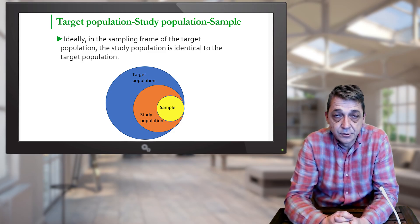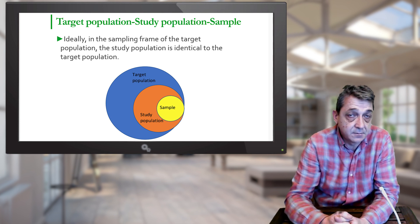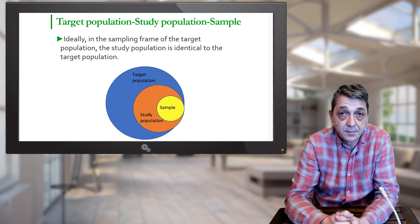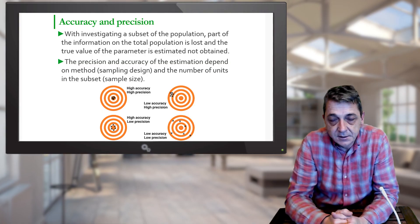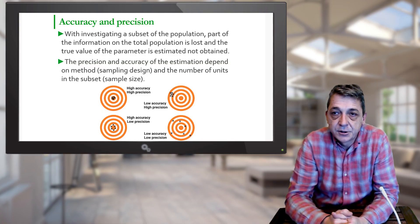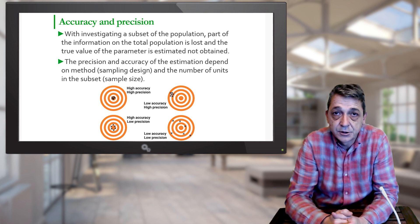As we know, this is not usually the case. Animal identification systems might exist or might not exist, or they are maybe partially introduced, so some animals are missing from the list. Some whole villages may also be missing from the sampling frame. We might therefore get samples from a population which is not representative of the target population. When investigating the subset of the population, part of the information which is present in the total population is lost.